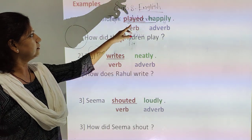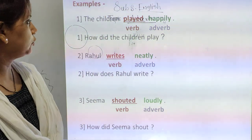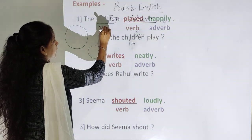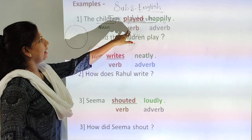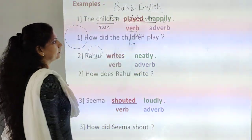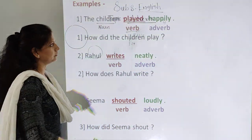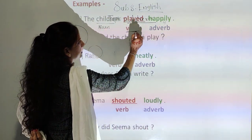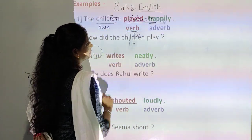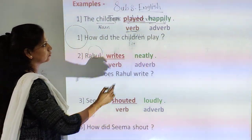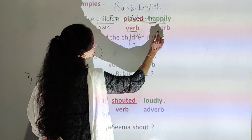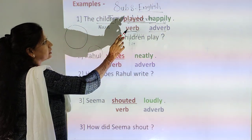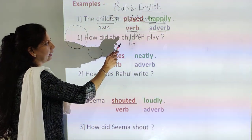The children played happily. Here, 'children' is a noun and 'played' is a verb — an action word. How did the children play? Children played happily. So 'happily' is an adverb. How did the children play? Children played happily.